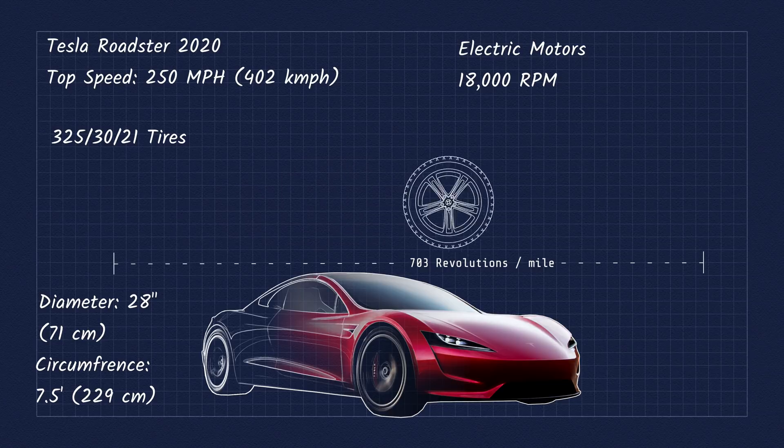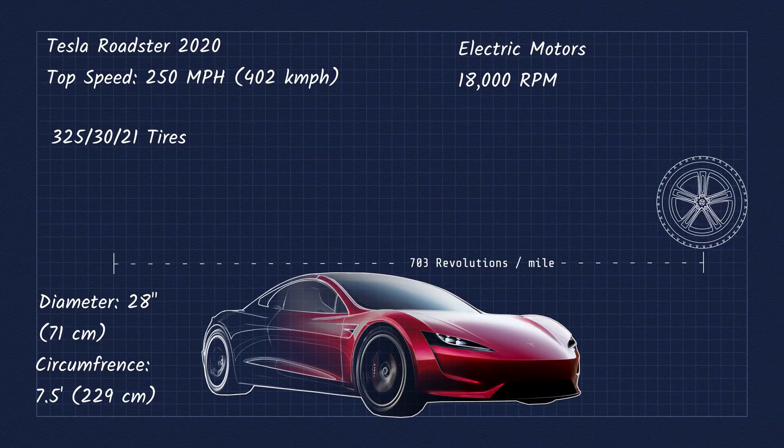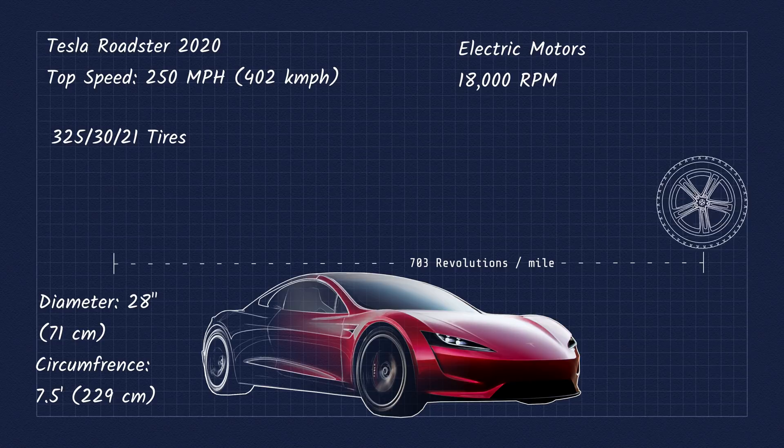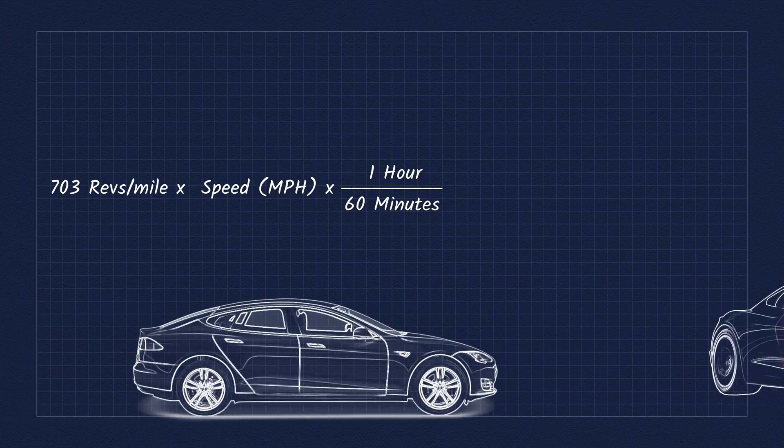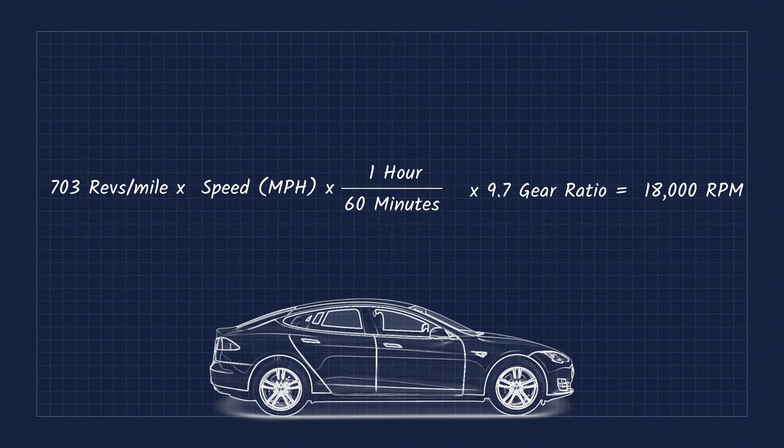This means the wheels will spin 703 times in a mile. Multiply that by the car's speed in miles per hour, divide by 60, and you'll get wheel revolutions per minute. If we look at the Tesla Model S, which has a fixed gear reduction of 9.7 to 1, the max speed would be 157 miles per hour.